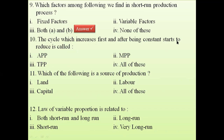Question 10: the curve which increases first, becomes constant, then starts to reduce — is it APP, MPP, or TPP? The answer is all of these, because TPP, MPP, and APP all start increasing, then become somewhat constant or saturated, and then start declining. So it is applicable for all three product curves — TPP, APP, and MPP.